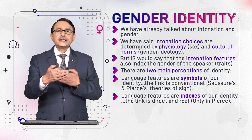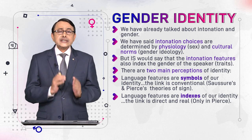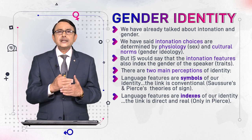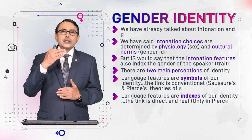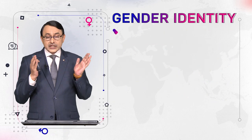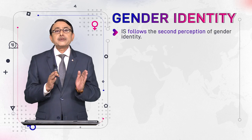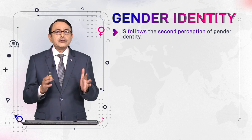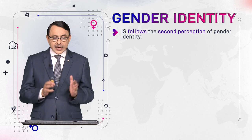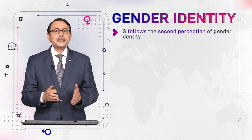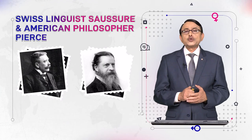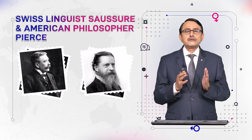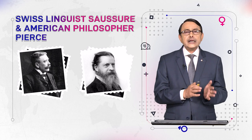The second perception is that language features are indexes of our identity. Index implies a direct relationship between the sign and the thing it represents. This idea comes from the philosopher Peirce, who gave us the concept of indexicality repeatedly used in IS. IS follows this second perception of identity.